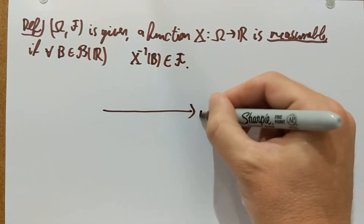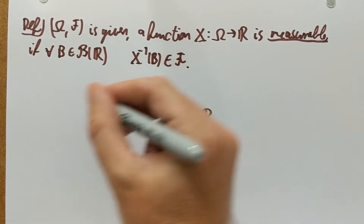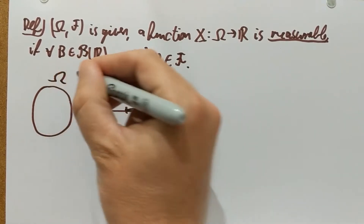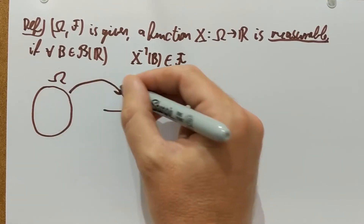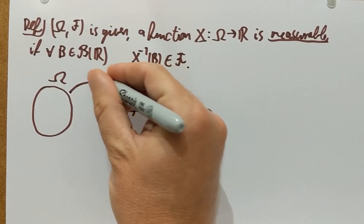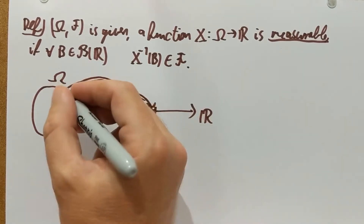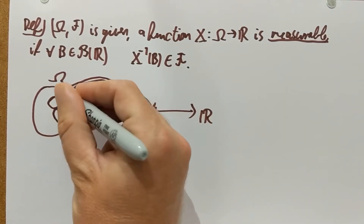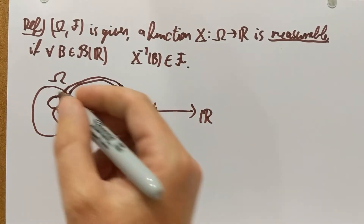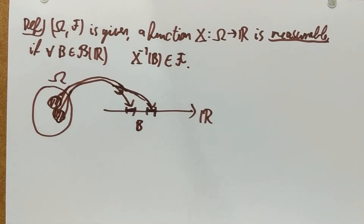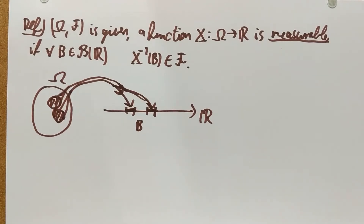So here is ℝ, and you can take any Borel set — for example in this diagram just two intervals. And here is the sample space Ω. The function goes from Ω to ℝ, and you try to find out what is the set of points in Ω which is mapped into your Borel set B — for example this union of two intervals. You want to find out which set here maps into these two intervals. This set is a subset of Ω, and if for every Borel set this subset of Ω belongs to the sigma-algebra, then we say the function X is measurable.